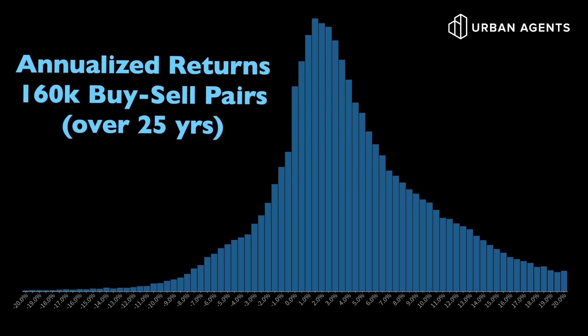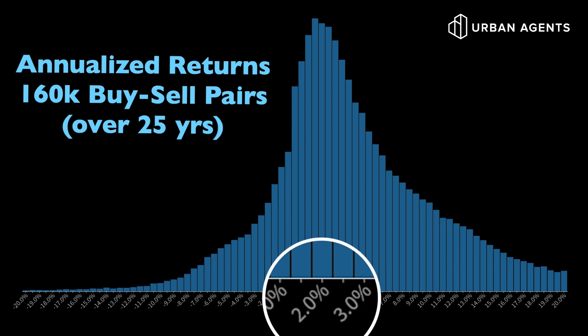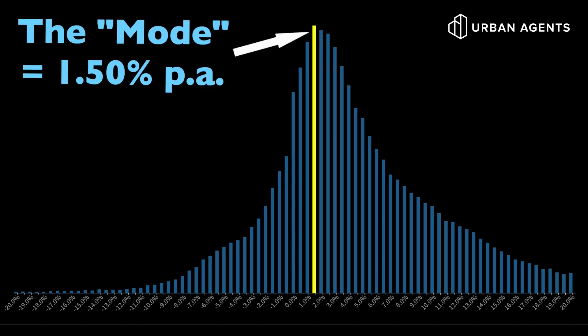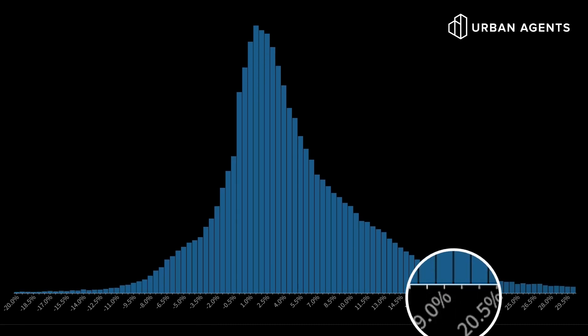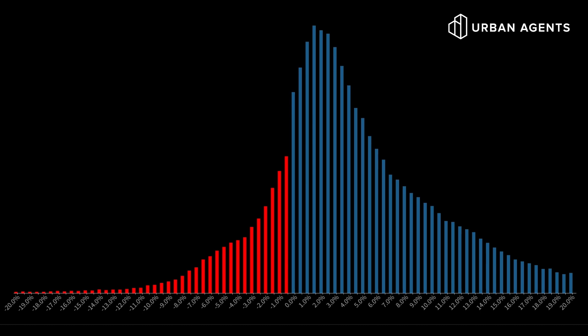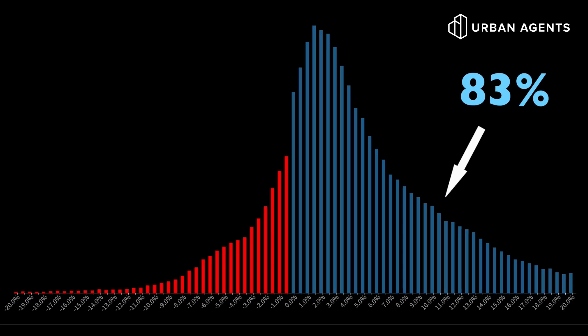This chart shows the distribution of annualized returns across all 160,000 buy-sell pairs over the 25-year period. The x-axis shows the range of annualized returns; the y-axis is a histogram of how many homeowners achieved each return. The most common return — the mode — is 1.5% per annum, though it's quite spread out. Some people made very healthy returns above 20% per annum, while others made losses. Color-coded: red is negative returns, blue is profit. About 83% of sellers at least broke even, while 17% sold at a loss.